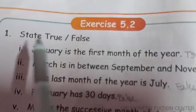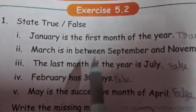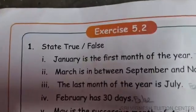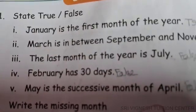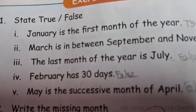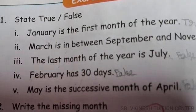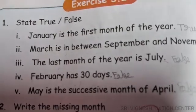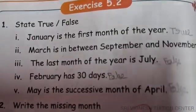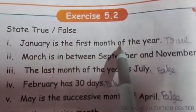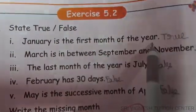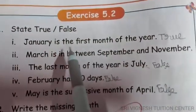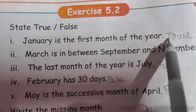Exercise 5.2 says: state true or false. First statement: January is the first month of the year. That is true.